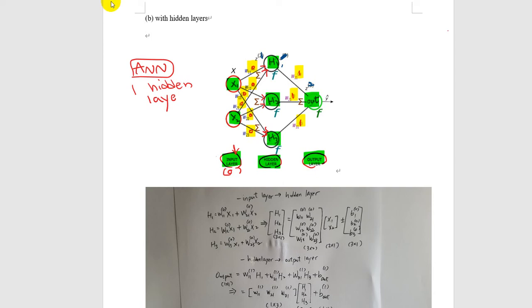We also have the output layer. We have to name all the weights here. If you see, the weight has two indices. And with a superscript of zero, for example, you know where your weights are originated — in this case, your weight is originated from the input layer. This is how you identify the input layer.